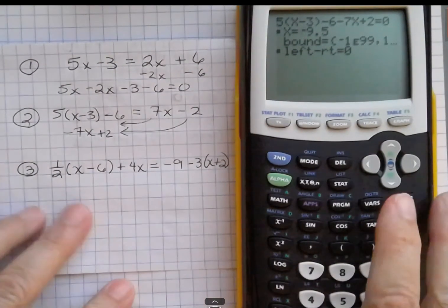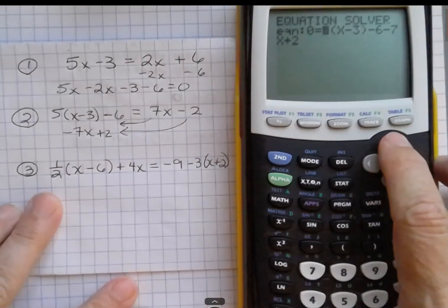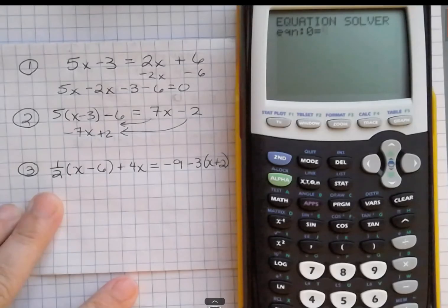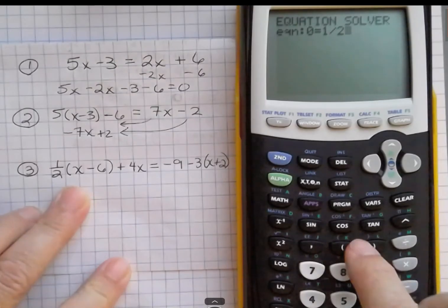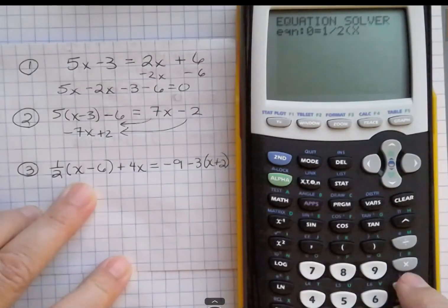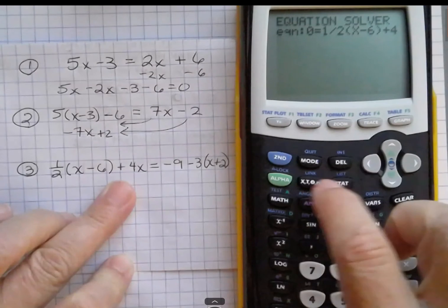And finally, the last one I'll do looks a little more complicated, so let's do that one. I'm going to clear that and then I'm going to hit 1 half, 1 divided by 2, parentheses, x minus 6, in parentheses, plus 4x.